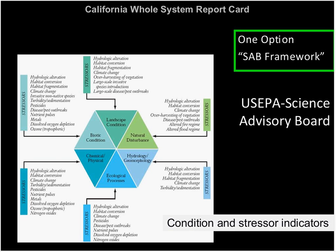Several years ago there was a work group in the state — a group of departmental leads that got together to respond to a governor's directive to develop a watershed strategic plan. The main item was to figure out how to report condition in a structured way for the state. Several options were looked at, and the one that was finally adopted — I think that was about 2006, 2007 — is based on the U.S. EPA Science Advisory Board's framework.